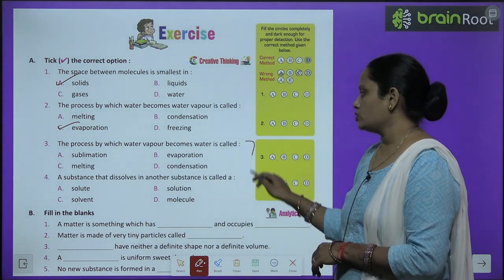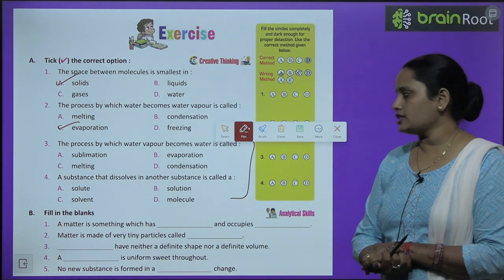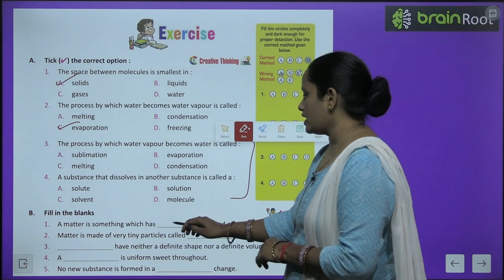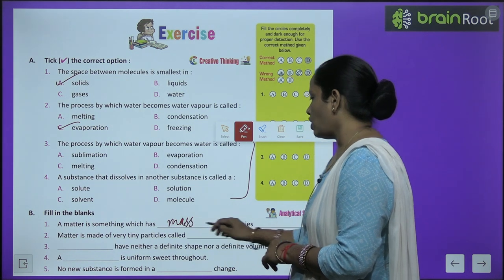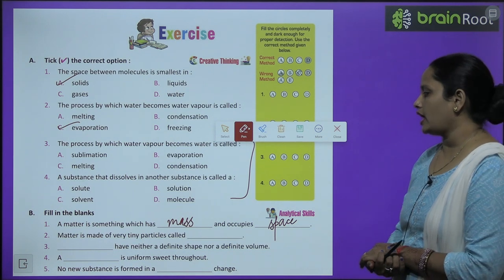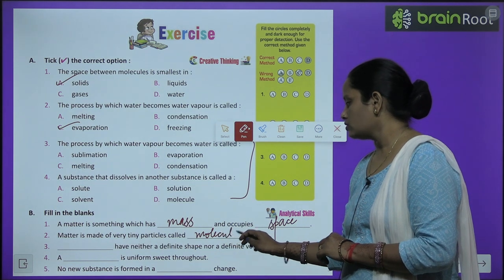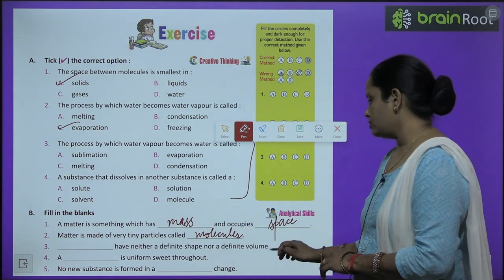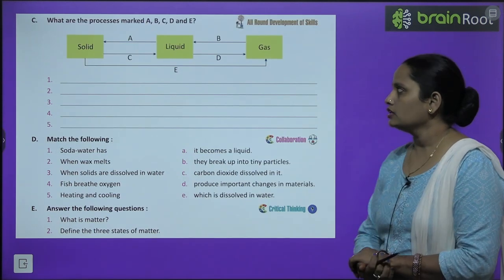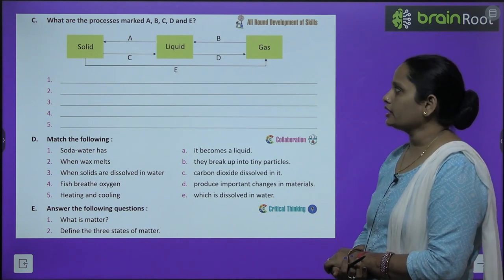Like this, children, do the rest of the questions yourself. Now let's move on to fill in the blanks. Matter is something which has mass and occupies space. Matter is made up of very tiny particles called molecules. Do the rest of the questions yourself after reading the chapter again. Now let's move on to Part C — what are the processes marked A, B, C, D, and E? You have to write it.